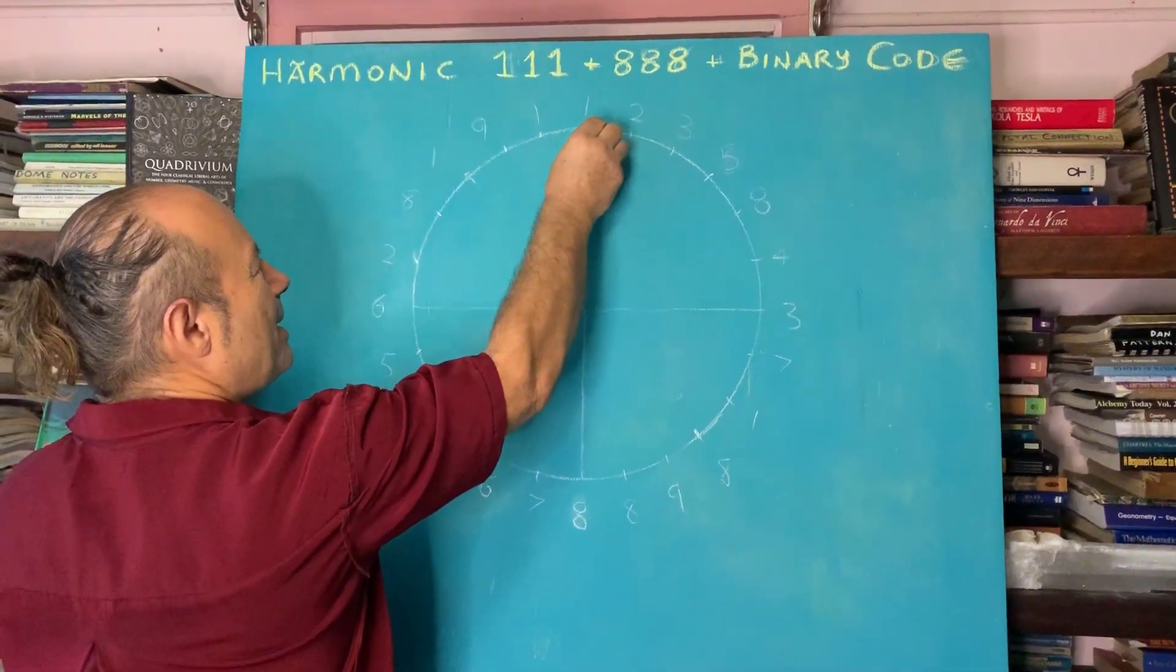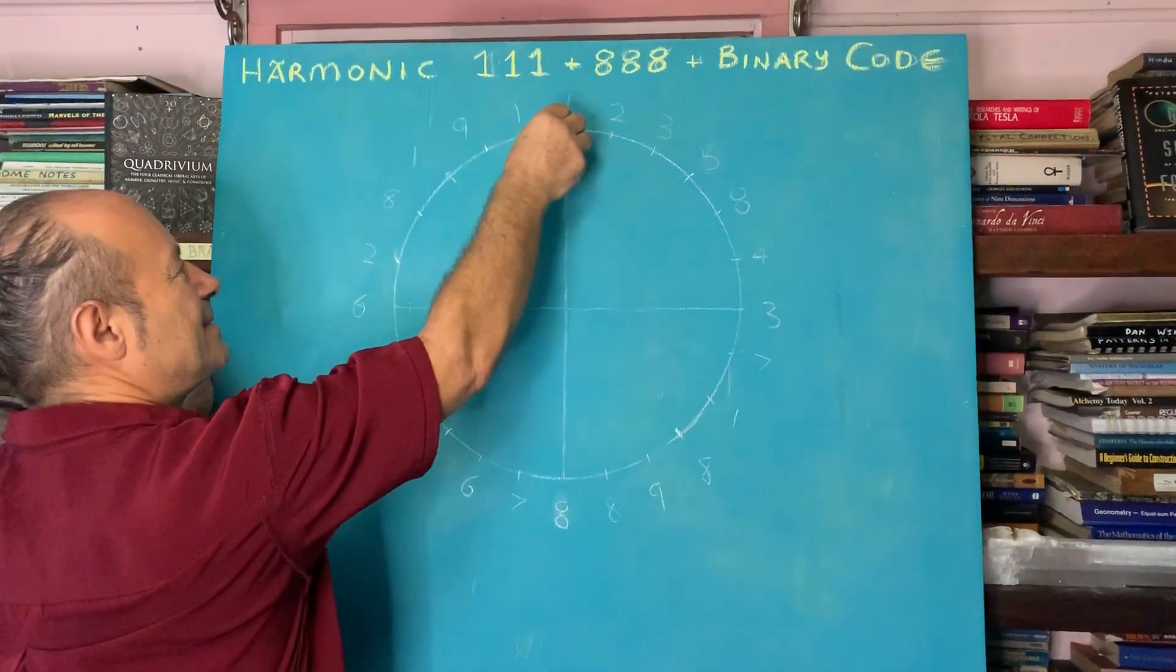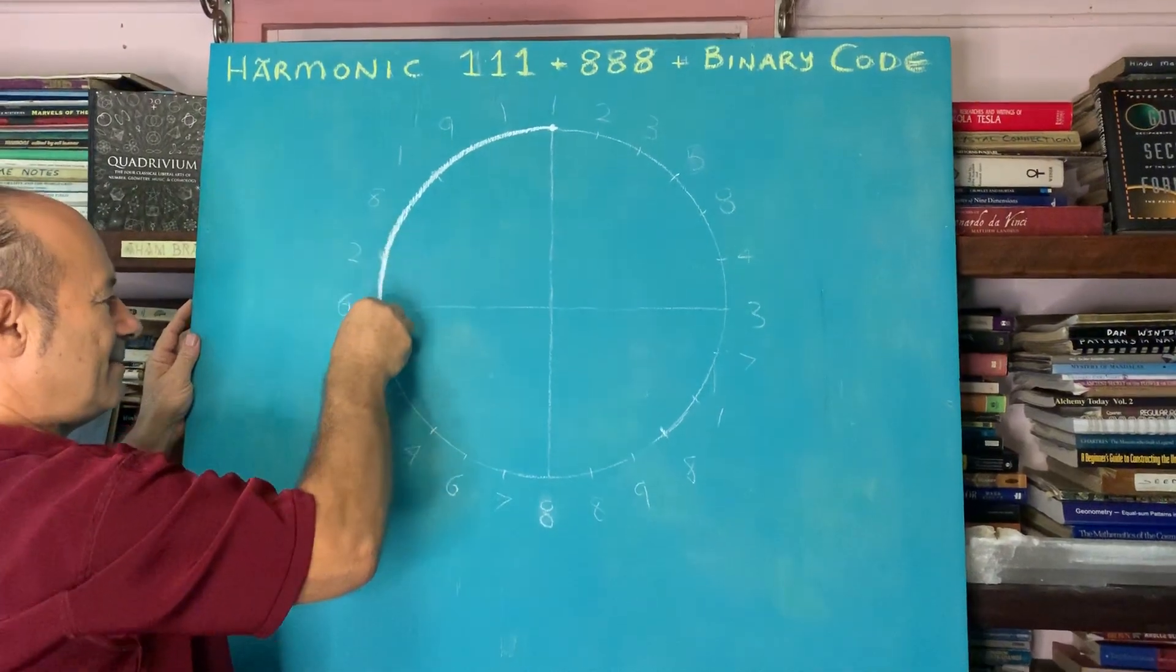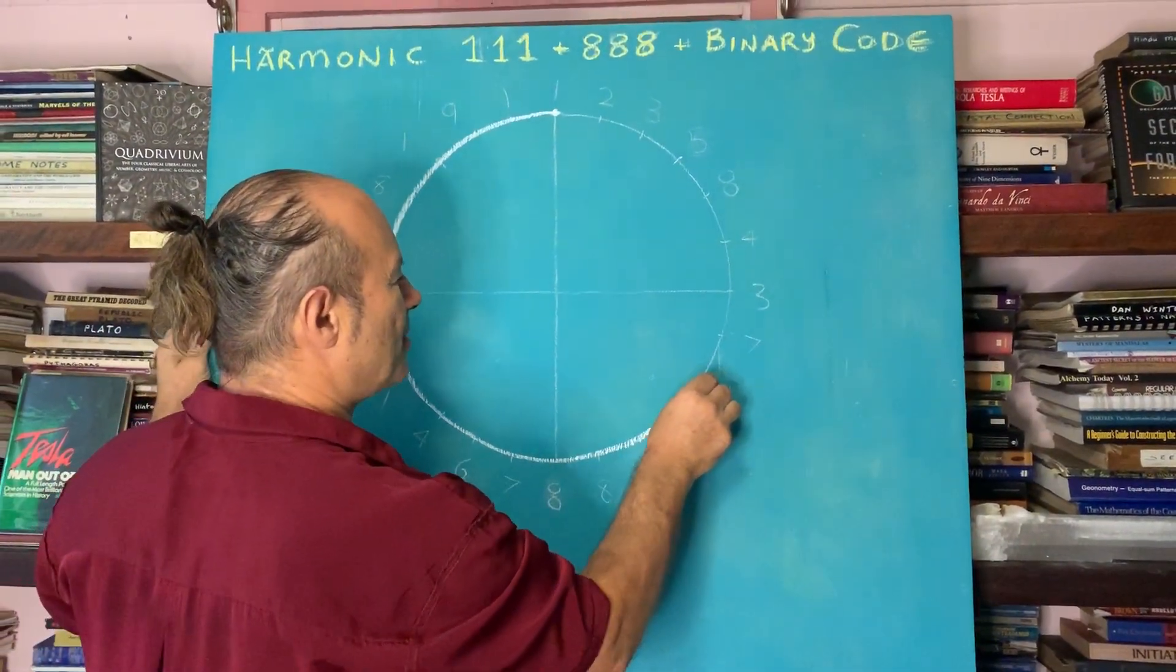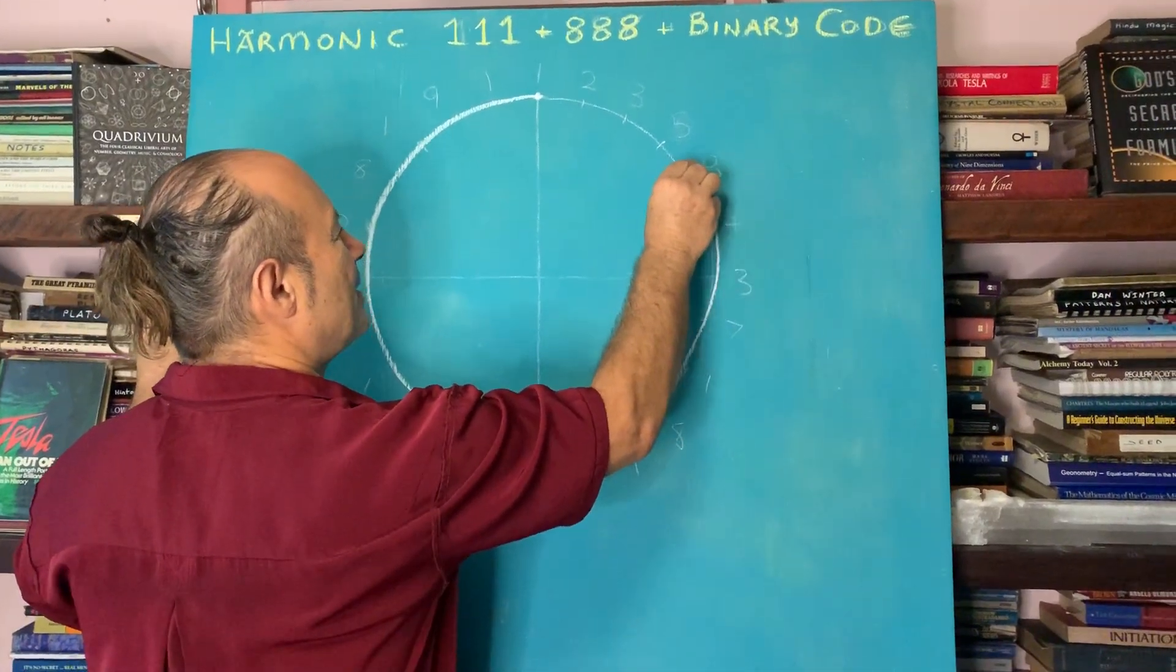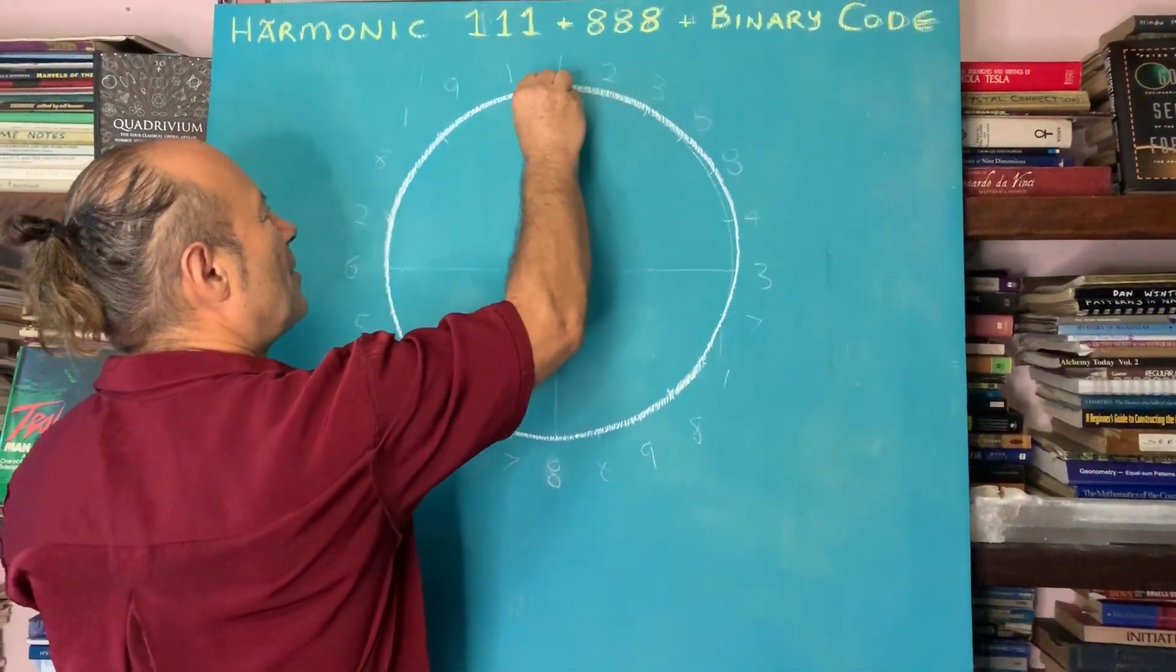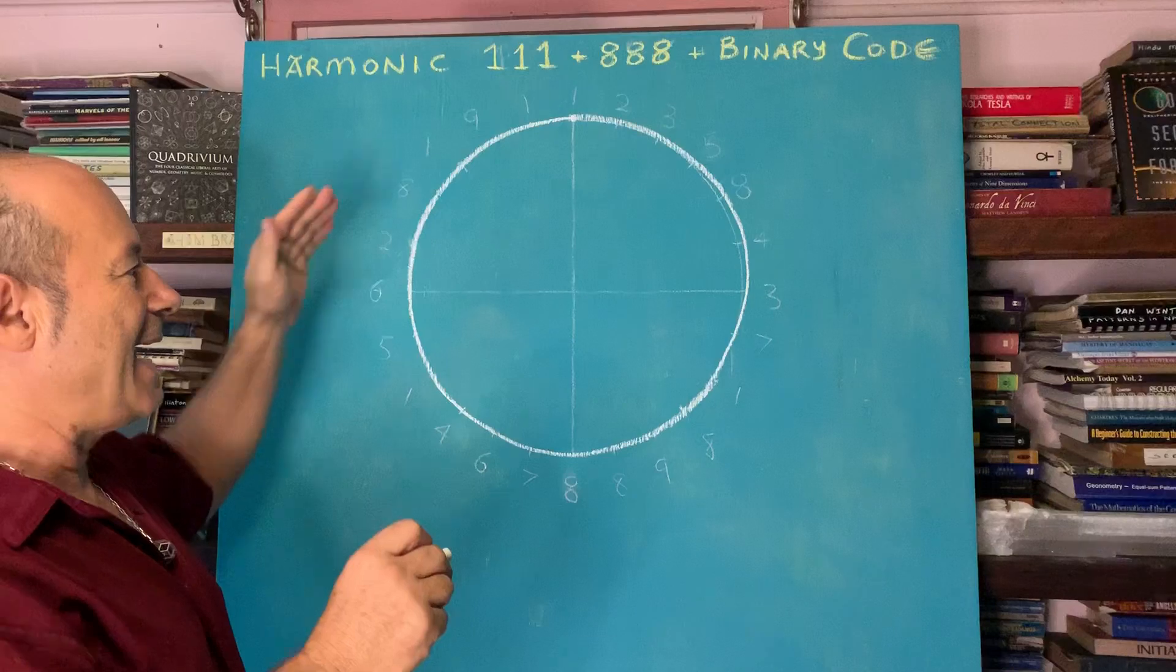This point up here is called the Zenith. I'm going to go around the circle anti-clockwise, because this story is about a mysterious thing with clockwise energy and anti-clockwise.